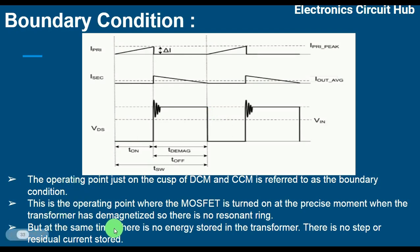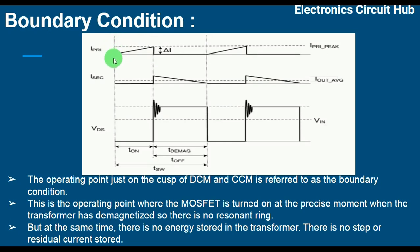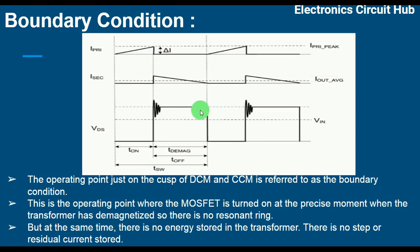At the same time, there is no energy stored in the transformer and no residual current stored. As already explained, you can see the transformer primary current ramps up from zero — there is no residual energy stored in the transformer. So this is basically on the cusp of DCM and CCM: no residual energy stored, and no valley switching or resonance switching after the transformer is completely demagnetized.